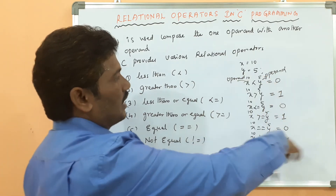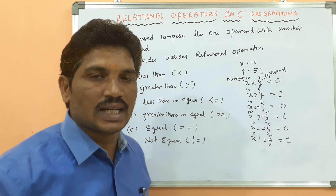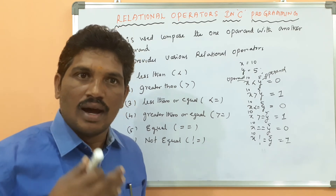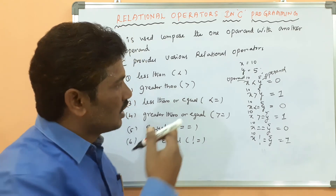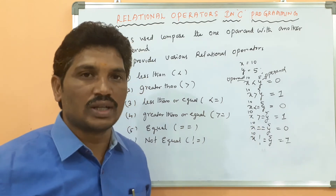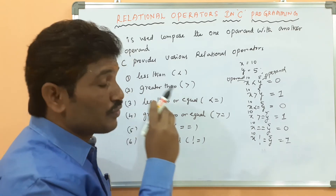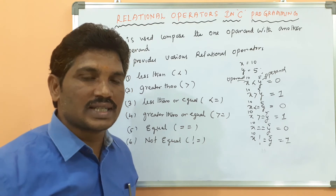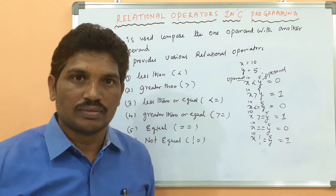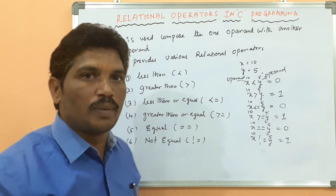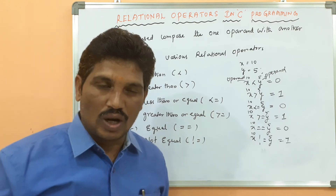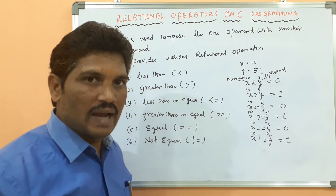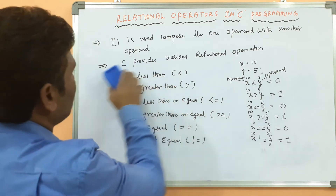These examples are about relational operators — how one operand should be compared with another operand: less than, greater than, less than or equal to, greater than or equal to, equal to, and not equal to. Relational operators play a very important role in any programming language. Whenever you use loops or conditional statements, they take a very important role in comparing two operands. Now I am going to write a code example for relational operators.